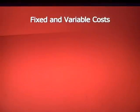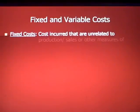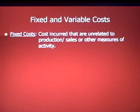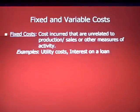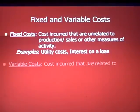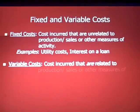When you think about fixed and variable costs, fixed costs are costs incurred that are unrelated to production, sales, or other measures of activity. These are the costs that happen no matter what. If you think about your own life, utility costs or interest on a loan — costs that occur with the passage of time — are a good example of fixed costs.